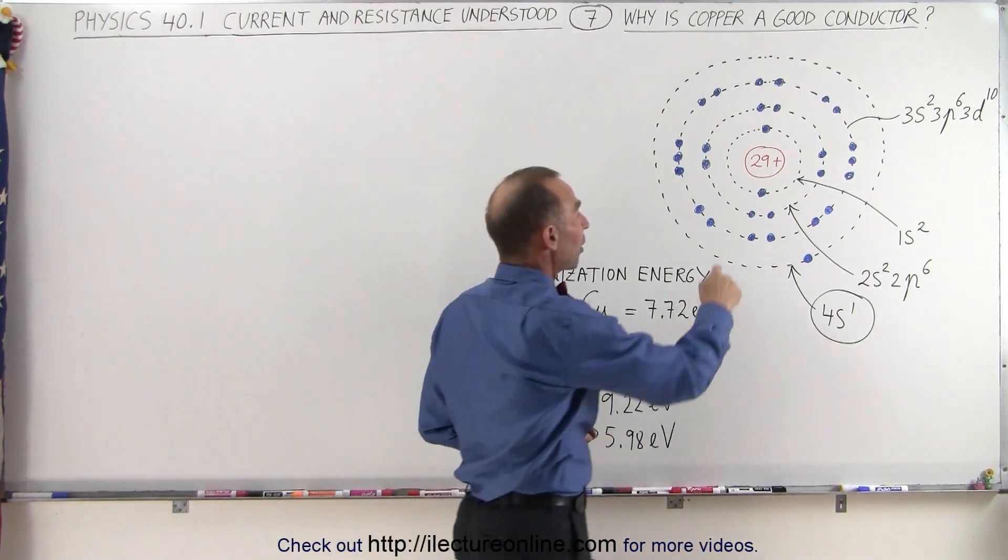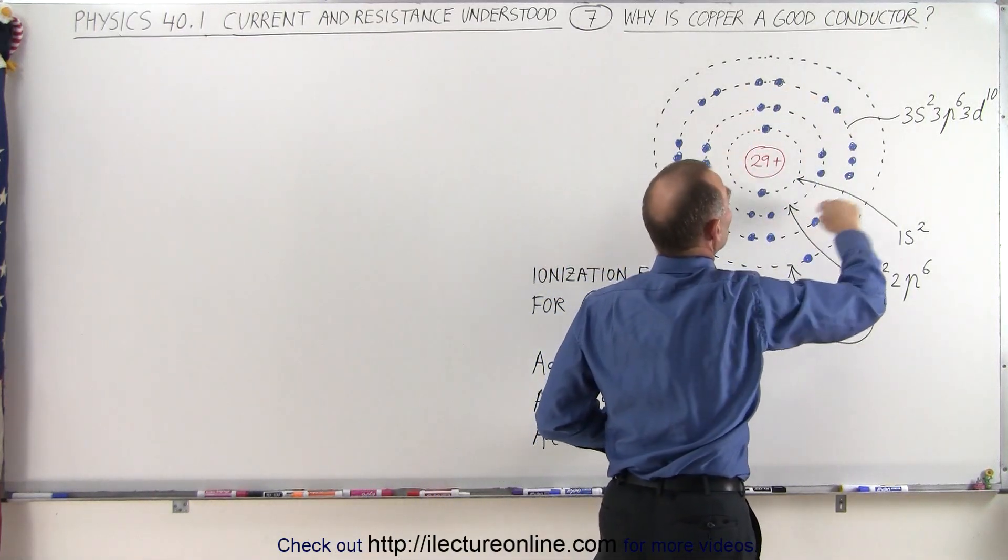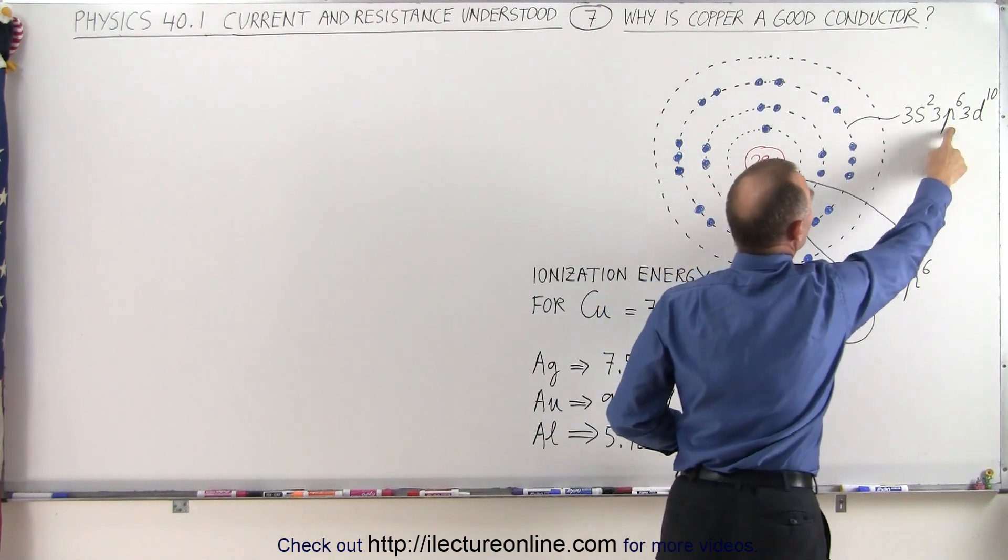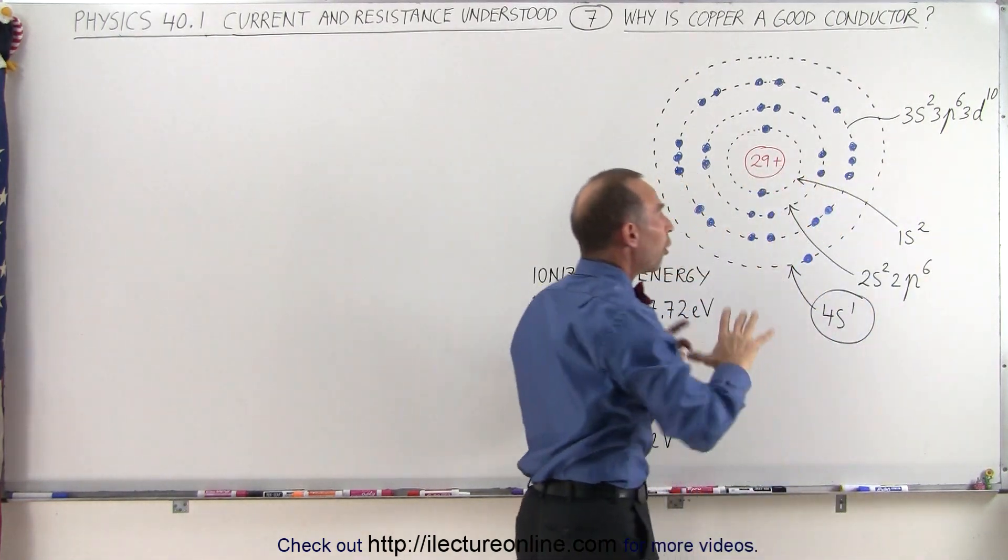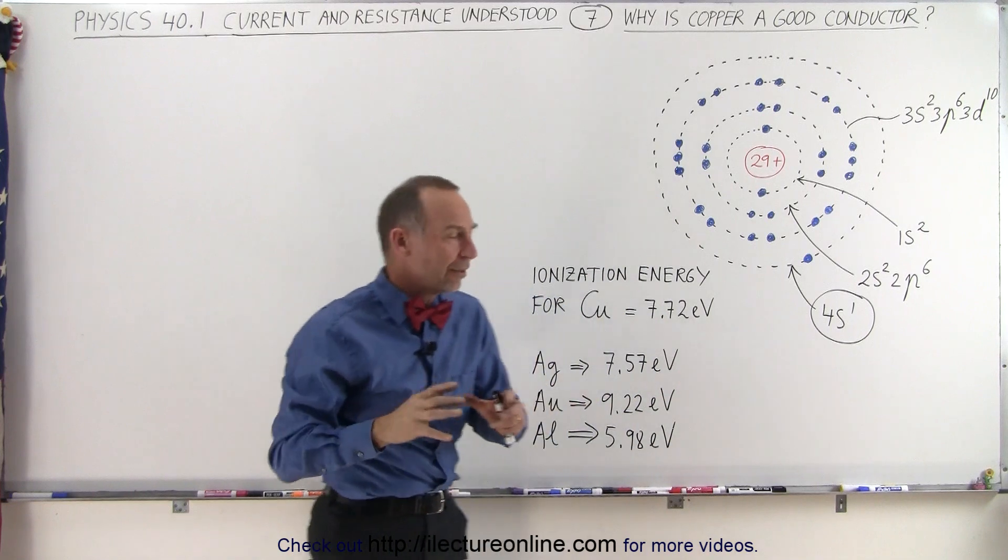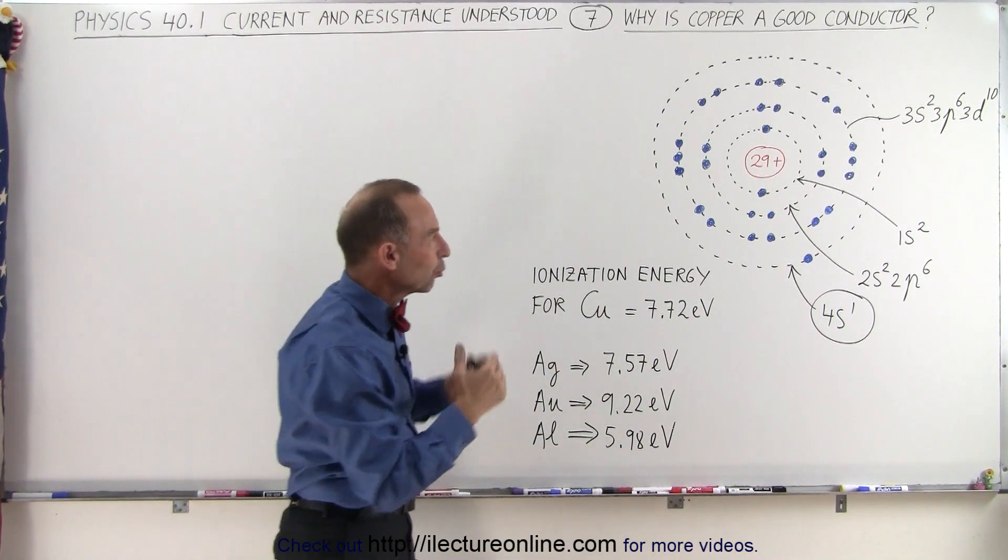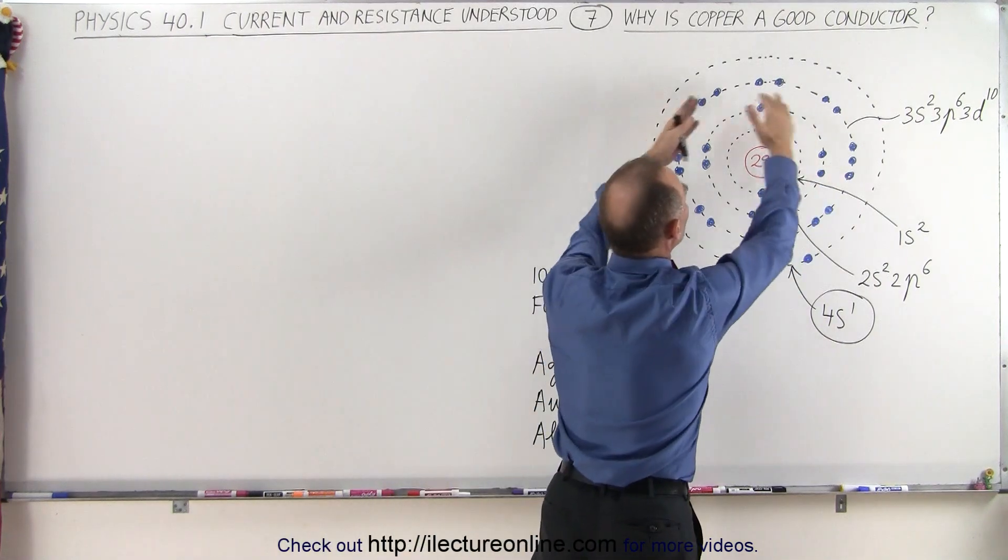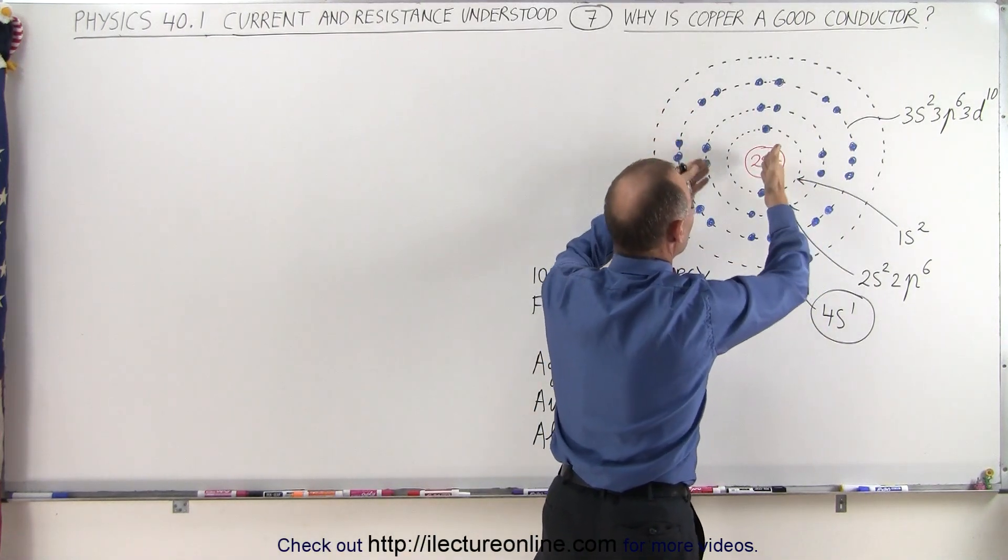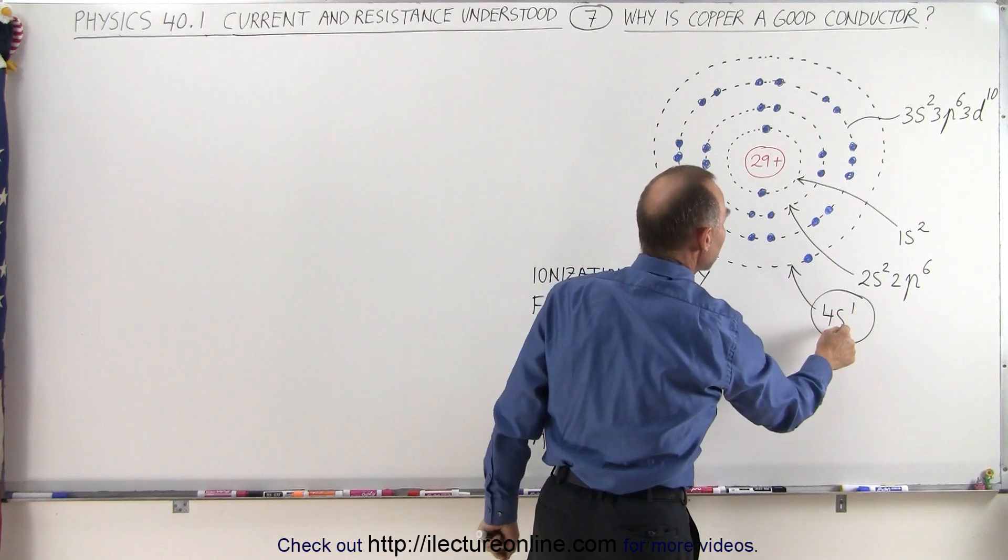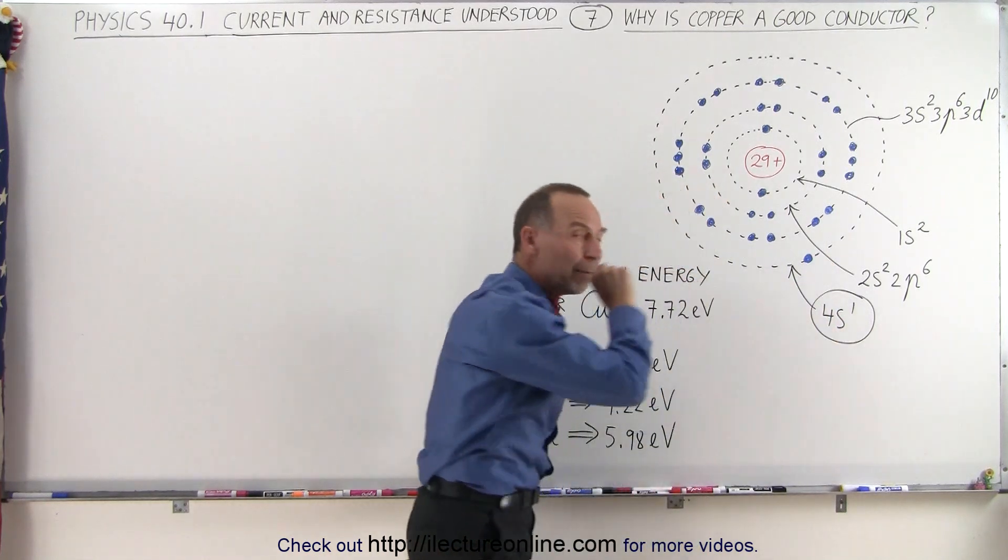Then the next 18 electrons will fill up the third energy level. The 3s, 3p, and 3d orbitals are all filled up. That sums up to a total of 28 electrons. And the very last electron, the 29th, has nowhere to go in the first three energy levels and therefore occupies the 4s orbital all by itself.